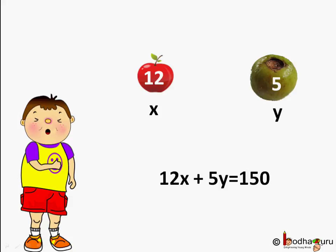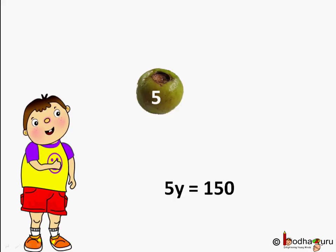If I take only guavas then 5Y has to be equal to Rs.150. Note then it has only one variable. On simplifying we get Y is equal to 150 by 5 which is equal to 30 guavas I can take. So if you observe that only one unique solution exists for the linear equation that has only one variable.